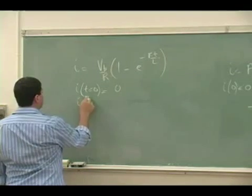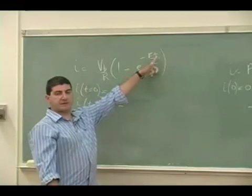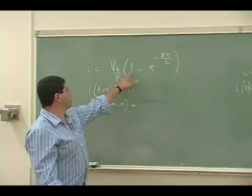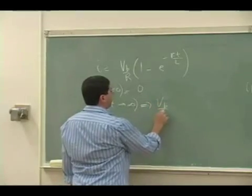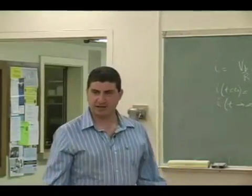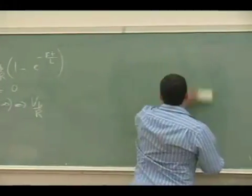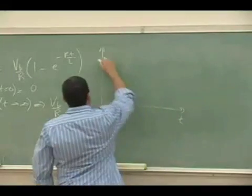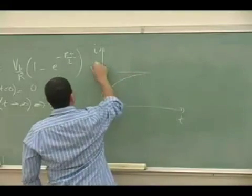And then what's the final current should be? As T goes to infinity, E to the negative infinity goes to 0, so you have 1. So the current approaches VB over R, which is what we predicted. So it approaches VB over R asymptotically. The current does look like exactly what we predicted. It starts with 0, asymptotically reaches VB over R.